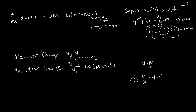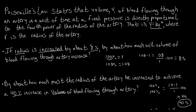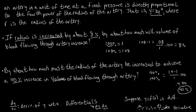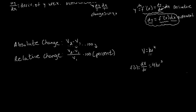Taking dV over dr, we derive volume with respect to radius using the power rule to get 4kr cubed. Here k is a constant of proportionality — a regular constant. Using the constant multiple rule, we can factor k out, differentiate r to the fourth to get 4r cubed, then bring k back in. So our derivative is dV/dr = 4kr³. Multiplying both sides by dr gives us the differential form: dV = 4kr³ dr.